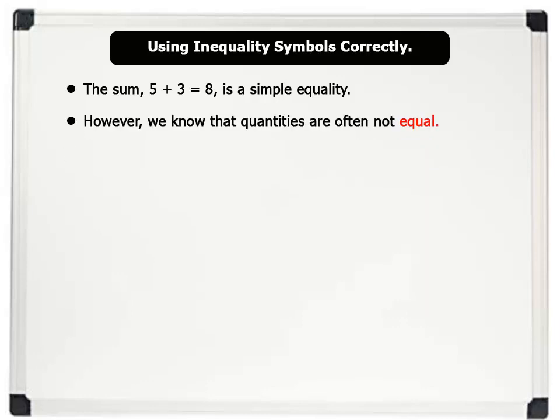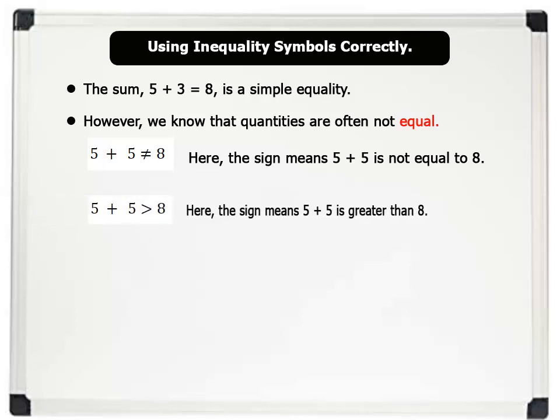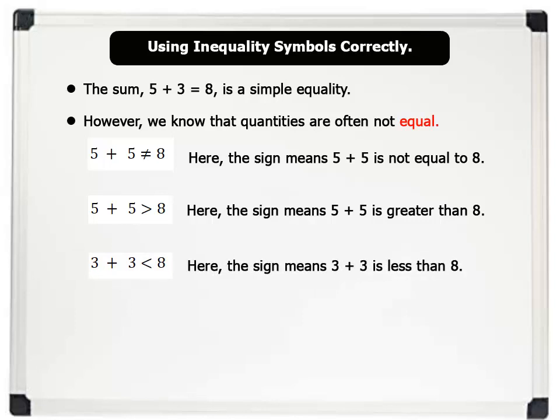Let us see these examples. 5 plus 5 is not equal to 8. Here, the sign means 5 plus 5 is not equal to 8. 5 plus 5 is greater than 8. Here, the sign means 5 plus 5 is greater than 8. 3 plus 3 is less than 8. Here, the sign means 3 plus 3 is less than 8.